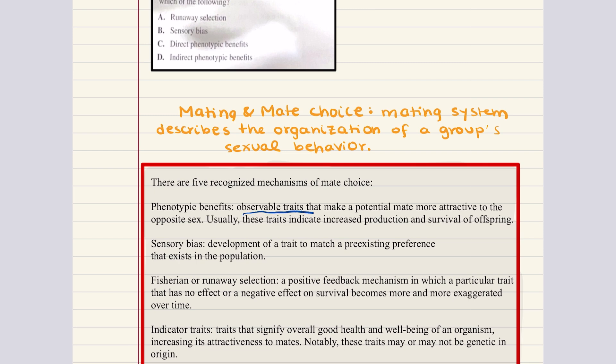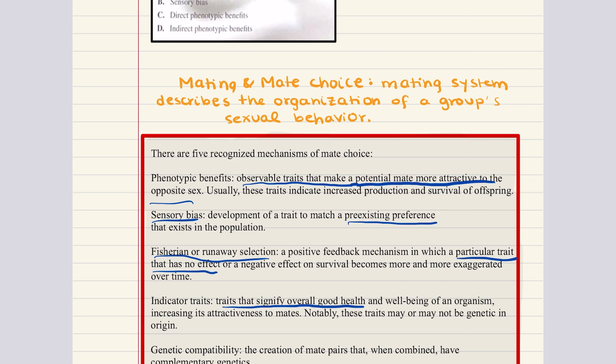Phenotypic benefit, this is an observable trait that makes a potential mate more attractive to the opposite sex. Then there's sensory bias, which is the development of a trait to match a pre-existing preference that exists in the population. Then we have fisherian selection or runaway selection, which is a positive feedback mechanism in which a particular trait that has no effect or a negative effect on survival becomes more and more exaggerated over time, usually because it is sexually appealing. Then there's indicator traits, which is traits that signify overall good health and well-being of an organism, increasing its attractiveness to mates. And then last, genetic compatibility, the creation of mate pairs that when combined have complementary genetics.